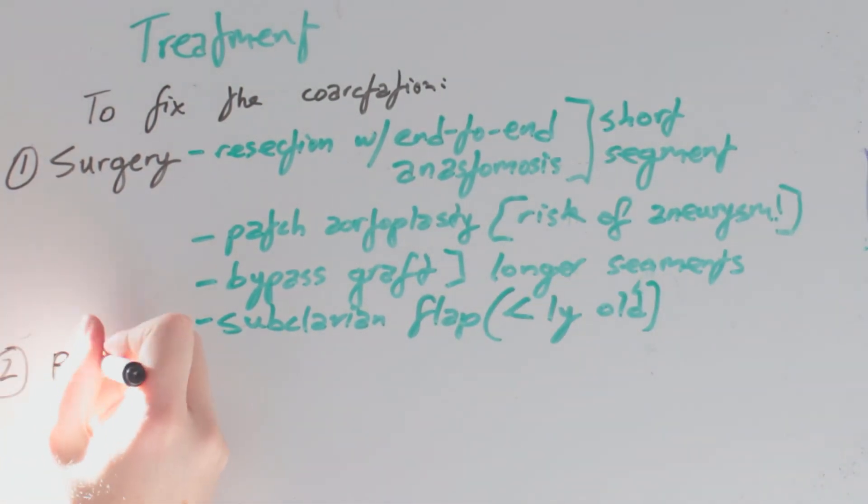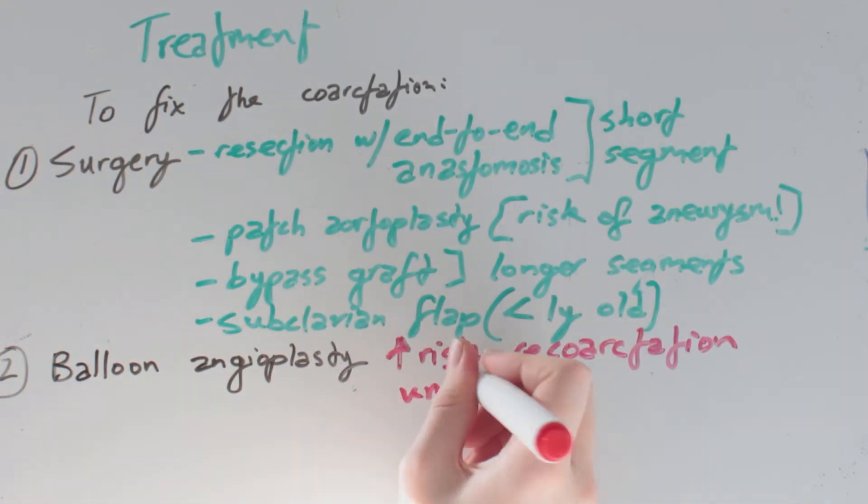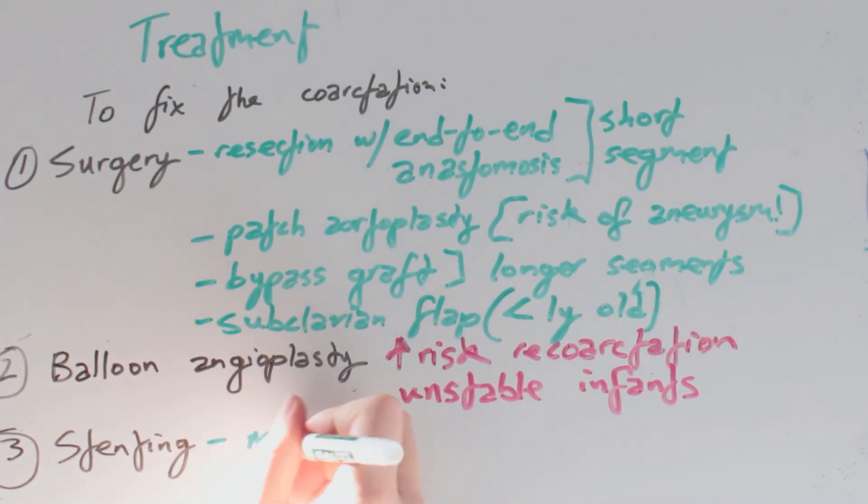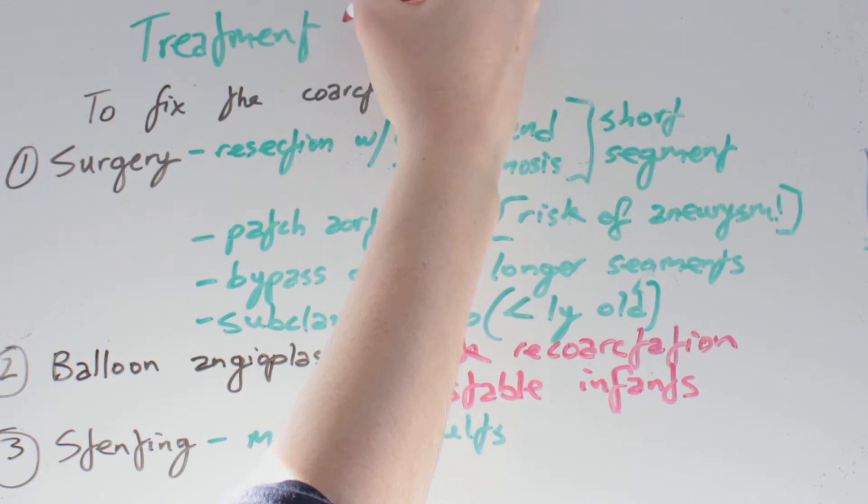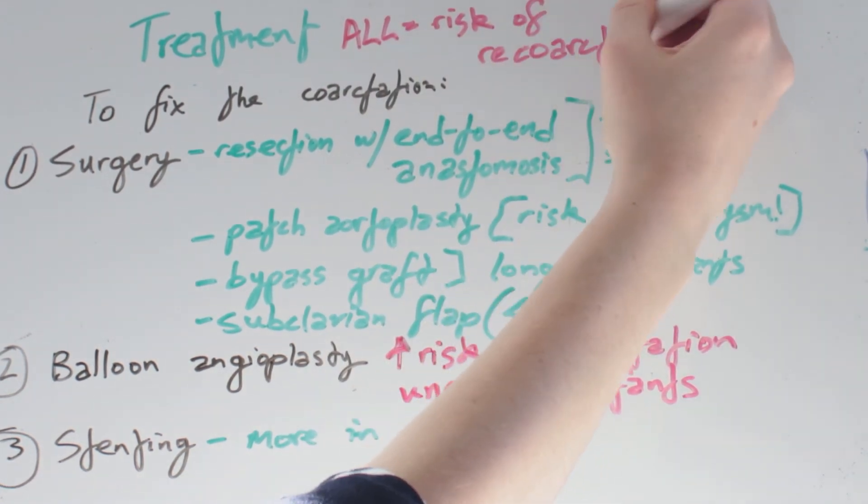Secondly, we have balloon angioplasty, but this carries an increased risk of recoarctation. It is recommended for unstable infants. Thirdly, stenting is an option which is mainly used in adults. It is important to note that all treatment carries a risk of recoarctation.